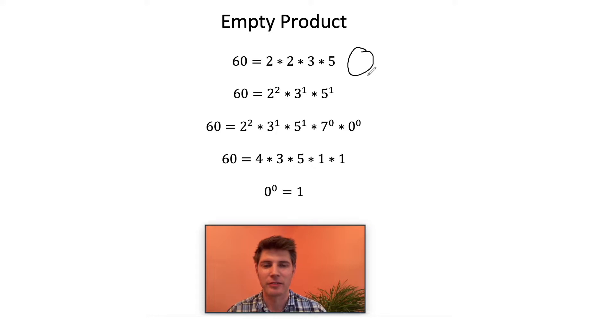Now, how many sevens do I have? Well, I have zero sevens, so I do seven to the zero. And if we stop there for a second and just ignore this piece, then it should make sense that two to the two is four, three to the one is three, five to the one is five, and seven to the zero is one. If we multiply four times three times five times one, we go back to 60. And that is why seven to the zero equals one.